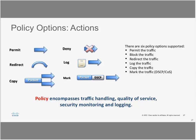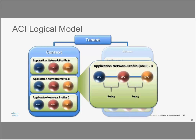Policy actions inside a contract include permit, redirect, log, mark, and QoS. Policy encompasses traffic handling, quality of service, security monitoring, and logging. To summarize: EPGs are where you put your VMs, IPs, and VLANs; contracts define how two EPGs communicate. An Application Network Profile is the umbrella that combines EPGs and contracts. You can have different tenants — each tenant could be a customer or an application — with different application network profiles and contracts between them.